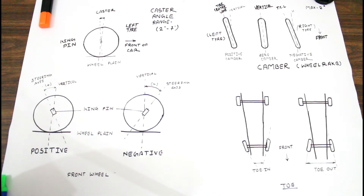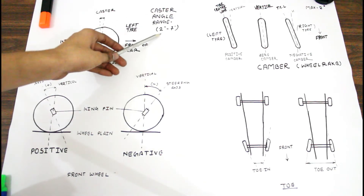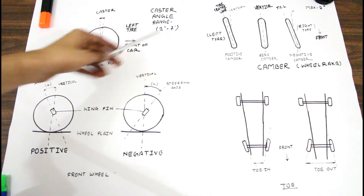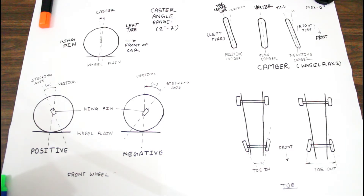The caster angle range is between 2 degrees and 7 degrees — not more than 7 and not less than 2 degrees. The purposes of providing caster angle are that it provides directional stability and control, and also reduces the steering effort.